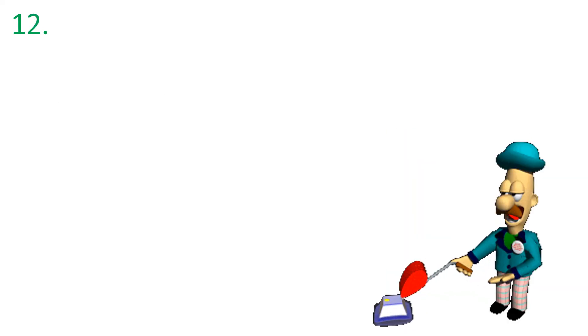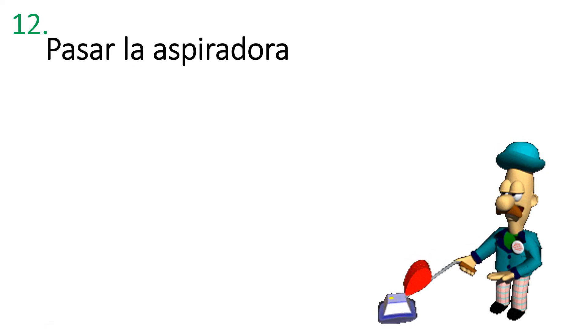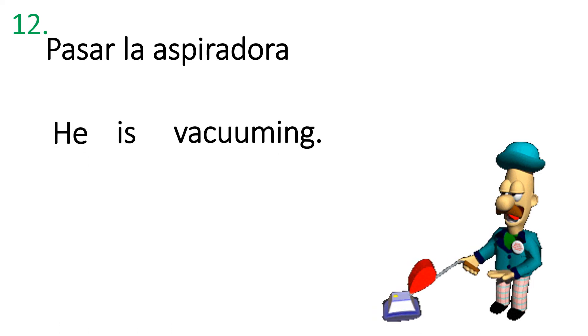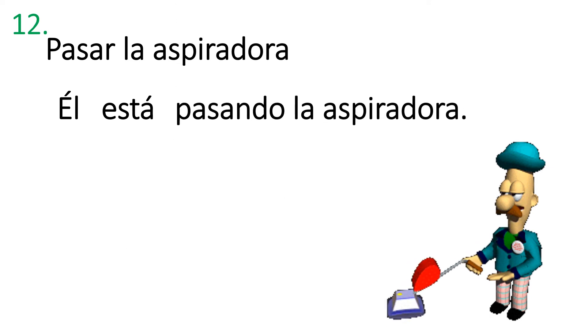Okay. Here we are. To vacuum. Cómo se dice to vacuum? Here's a hint. To pass the vacuum, is how we say. You're passing it along the floor. It's a cognate. That's right. Pasar la aspiradora. How would you say he is vacuuming? Pause and write it down. Check your answer. Él está pasando la aspiradora. He is vacuuming.